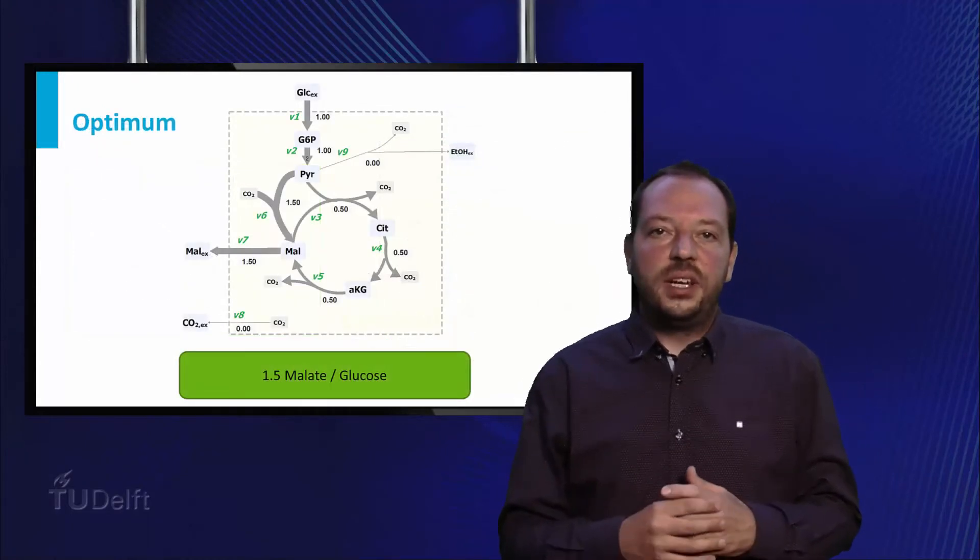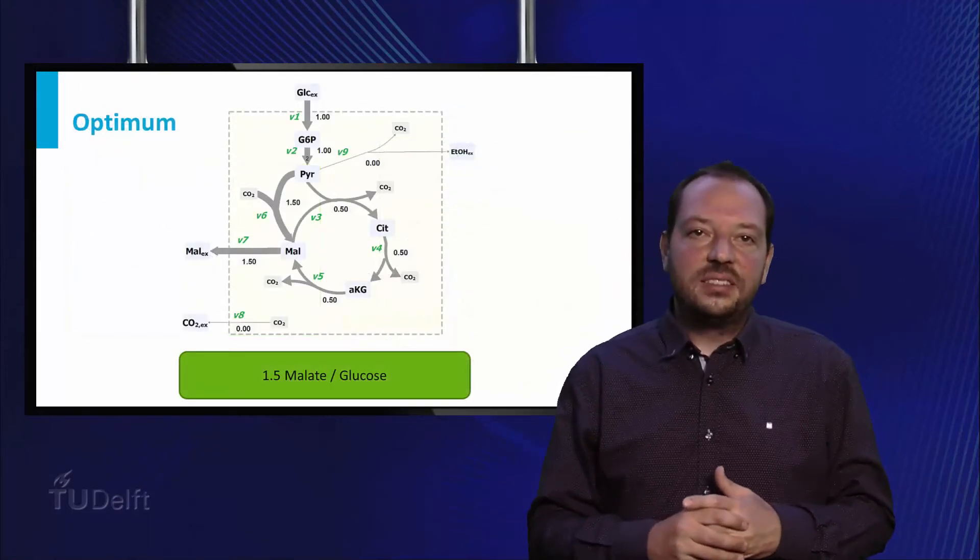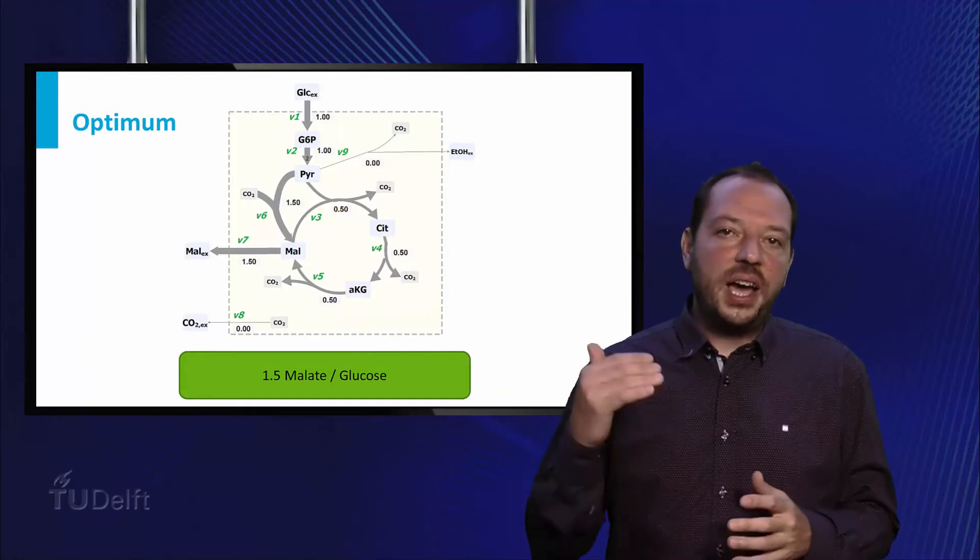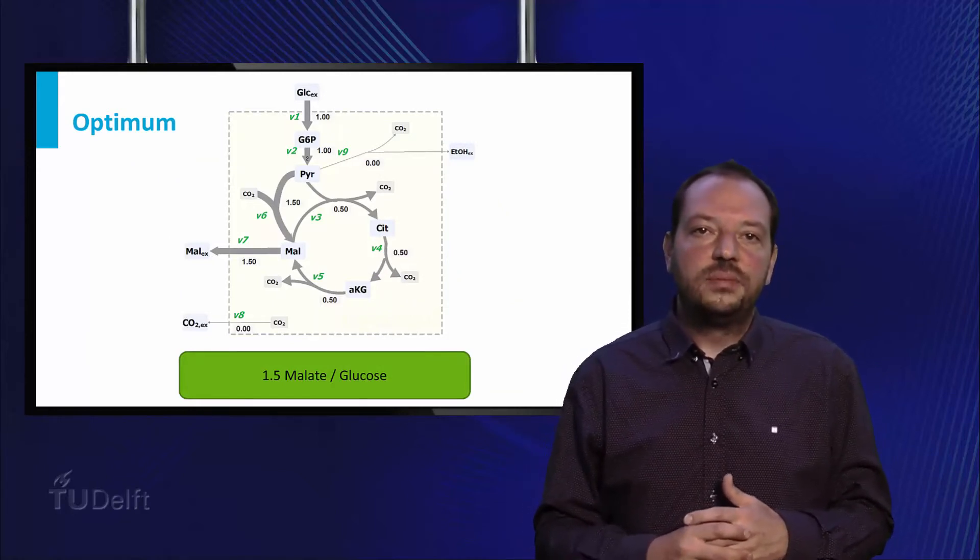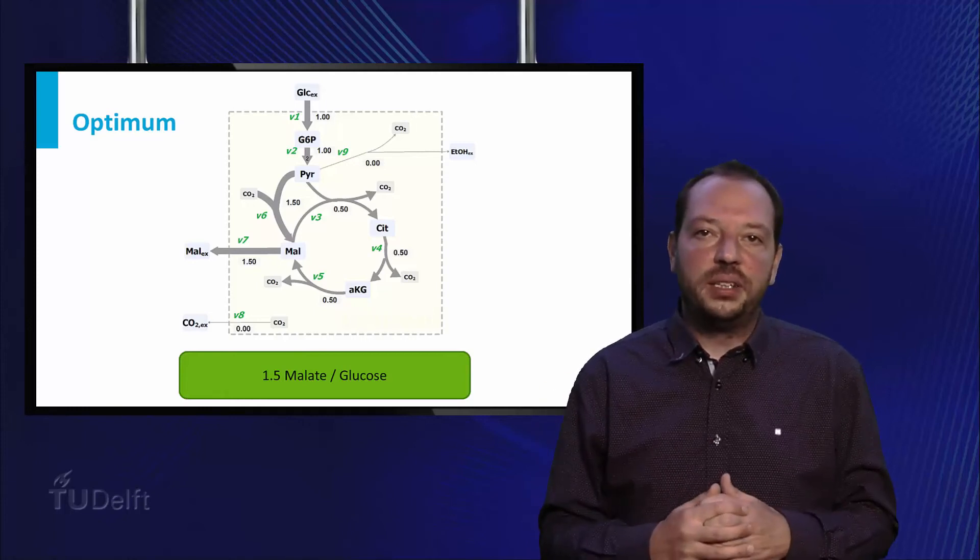This network analysis now demonstrates that V6 and V7 would require high levels of expression, V9 should best be knocked out, and V3 should be upregulated.